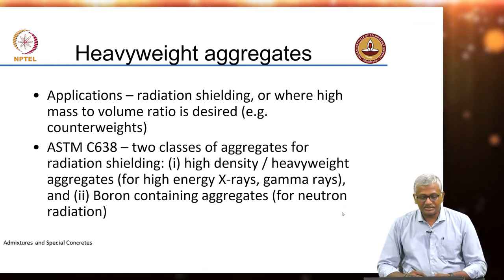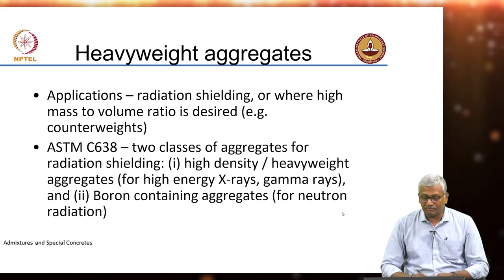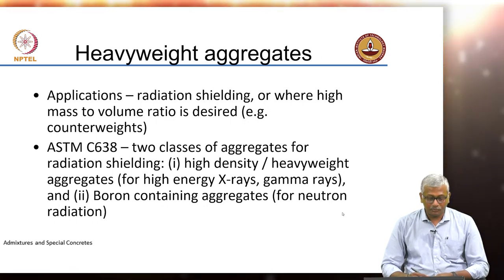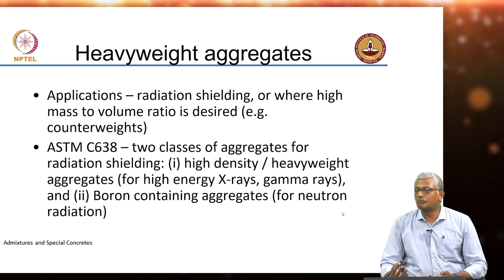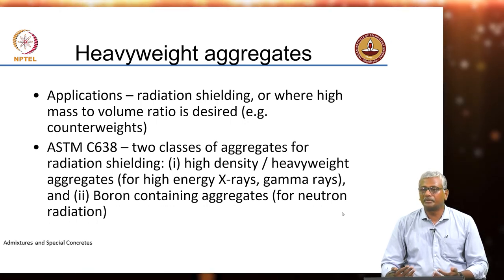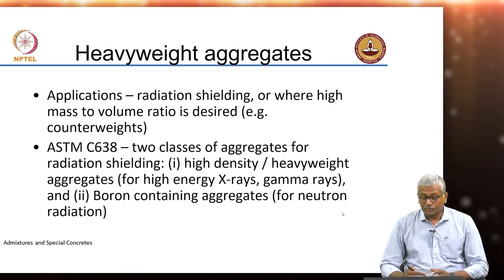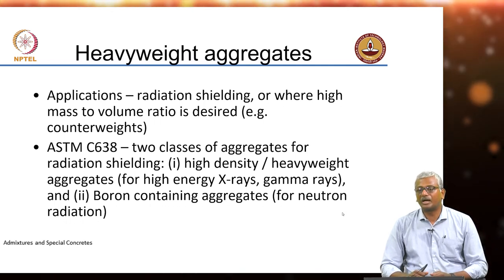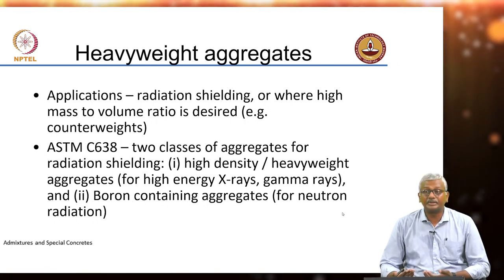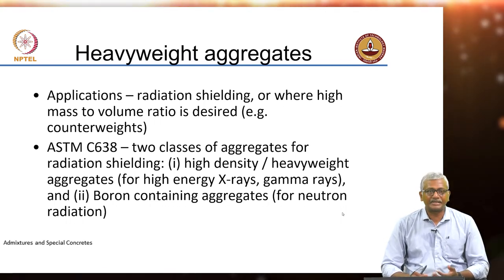If you look at ASTM 638, which talks about the use of aggregates for radiation shielding, they divide into two purposes. One is high density or heavyweight aggregate, which is used for high energy X-rays and gamma rays. And boron-containing aggregates for neutron radiation — there are certain nuclear reactors based on heavy water where neutrons may be generated. These neutrons are prevented from getting out by efficient shielding, typically done with aggregates containing boron. Those are not essentially heavyweight aggregates; they must have the property of restraining neutrons. Whereas heavyweight aggregates like iron-bearing aggregates are used to stop high energy radiations like X-rays and gamma rays.